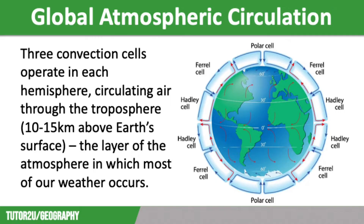This system is driven by the equator, where air rises due to the solar radiation there. This leads to low pressure and rainfall. When it reaches the edge of the atmosphere it moves either north or south, with the air becoming colder and denser so it sinks. This creates high pressure and dry conditions at around 30 degrees north and south.